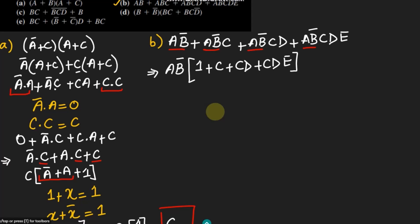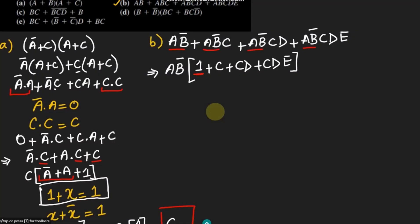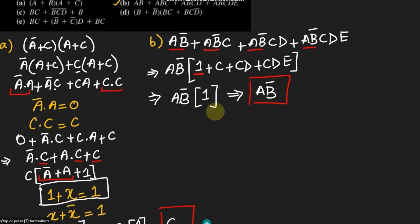We have shown that if 1 is added with any expression, we get 1. Here, 1 is added with all of these expressions — c, cd, and cde — so the bracket simplifies to 1. Therefore we get ab' multiplied by 1, which gives us ab'. So the answer to part B is ab'.